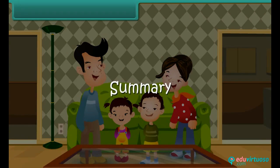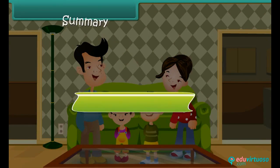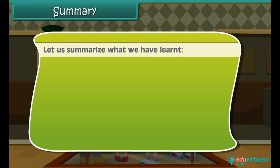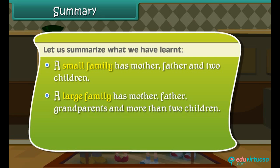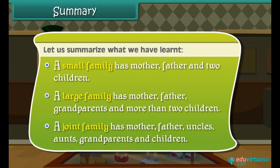Summary: Let us summarize what we have learned. A small family has mother, father, and two children. A large family has mother, father, grandparents, and more than two children. A joint family has mother, father, uncles, aunts, grandparents, and children.